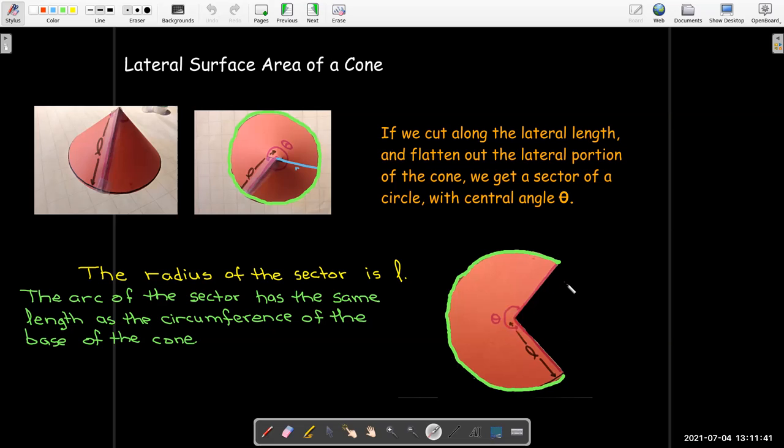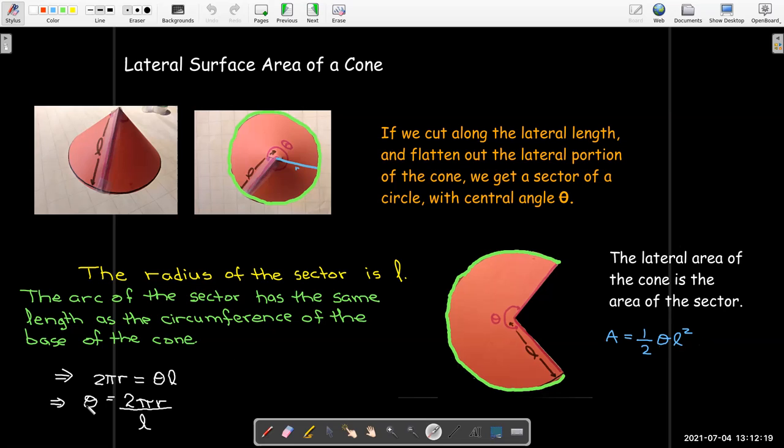If theta is in radians, this length of the sector is theta times L. And we know that the circumference should be 2πr. This allows me to write theta in terms of L and r. The area of this sector is the lateral area of the cone - one half theta L squared. Now we can use algebra and replace theta with our expression 2πr over L. And that reduces to πrL. So the lateral area of a cone is simply πrL. That's for the entire cone.